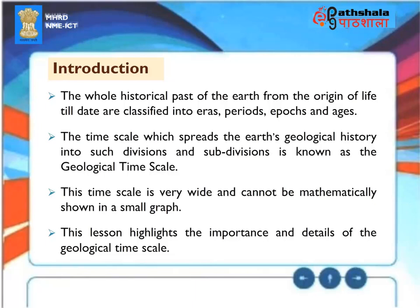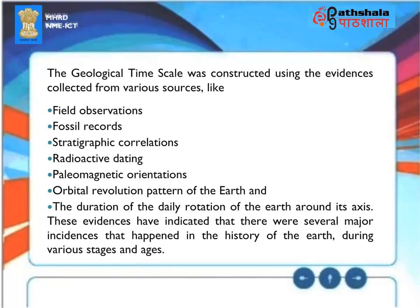This time scale is very wide and cannot be mathematically shown in a small graph. The geological time scale was constructed using evidences collected from various sources like field observations, fossil records, stratigraphic correlations, radioactive dating, paleomagnetic orientations, orbital revolution pattern of the Earth, and the duration of the daily rotation of the Earth around its axis. These evidences have indicated that there were several major incidents that happened in the history of the Earth during various stages and ages.